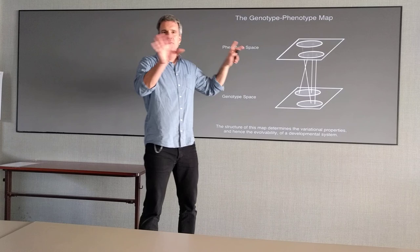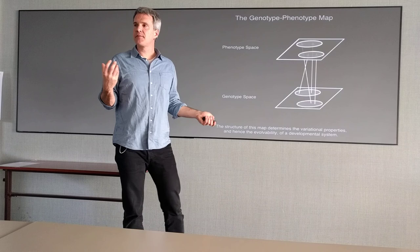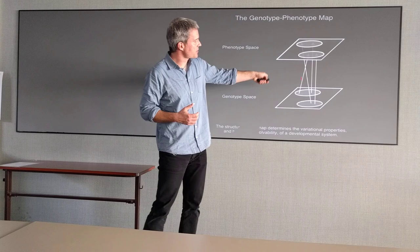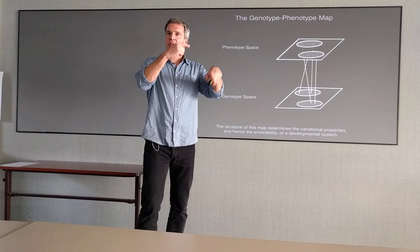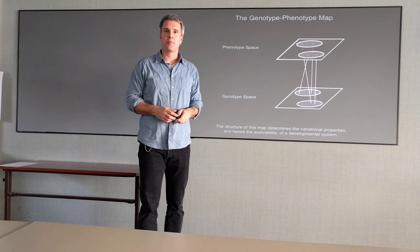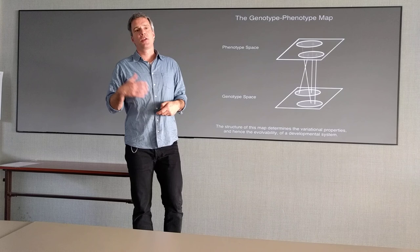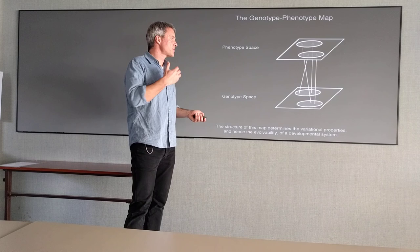What is useful here is it actually frames a really interesting question. How do you get from here to here, and how do you understand the structure of this map? If you understand the structure of this map, you understand the constraints on the life cycle that I was showing you before. Are you still with me? It's a very abstract idea. You want to have a model of this map.